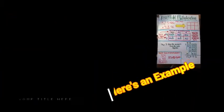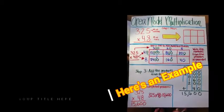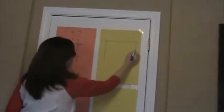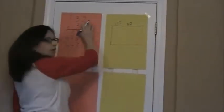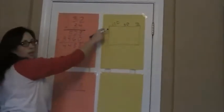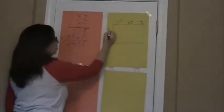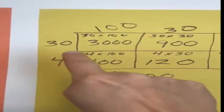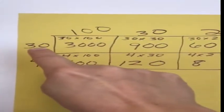Now I'll remind you about the array model method. In this one, we break down the numbers we're multiplying. Our first number is 132, so we break it into its parts: the one is one hundred, the three is thirty, and the two is two. Our second number, 34, goes down the side: the three is thirty and the four is four. Then I build my area box and use each box to multiply what's on the side by what's on the top.